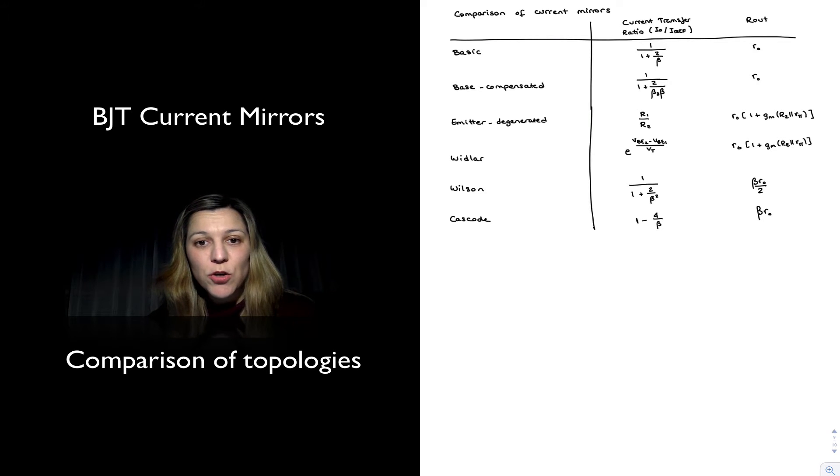Hello. As a final note on current mirrors, I wanted to draw a quick comparison between all the current mirrors we have studied. I created this chart, a comparison of current mirrors where I list all the different current mirrors we have seen using BJT transistors. I wrote down the corresponding current transfer ratios, meaning the ratio of the output current to the reference current, as well as the value for the output resistance R out.